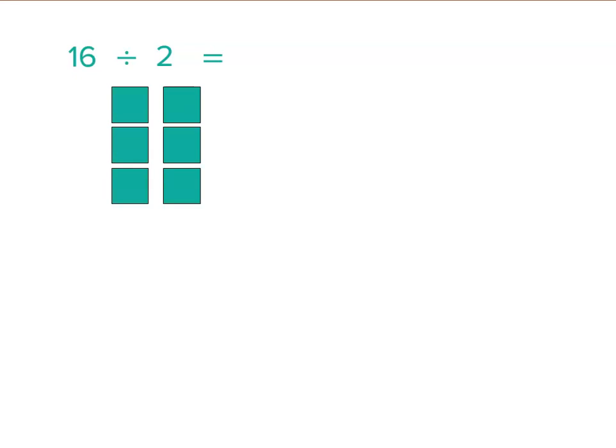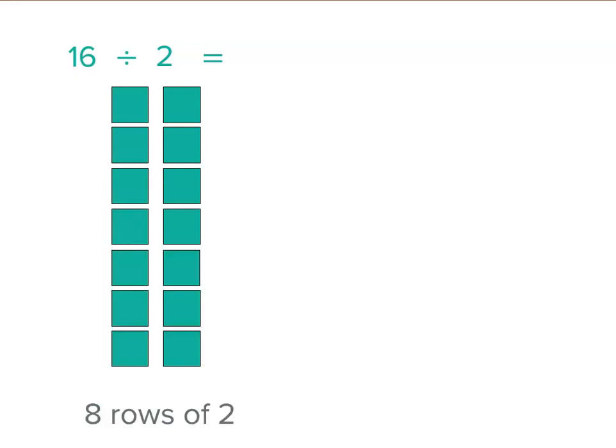One, two, three, four, five, six, seven, eight. There's eight rows of two. So 16 divided by two equals eight.